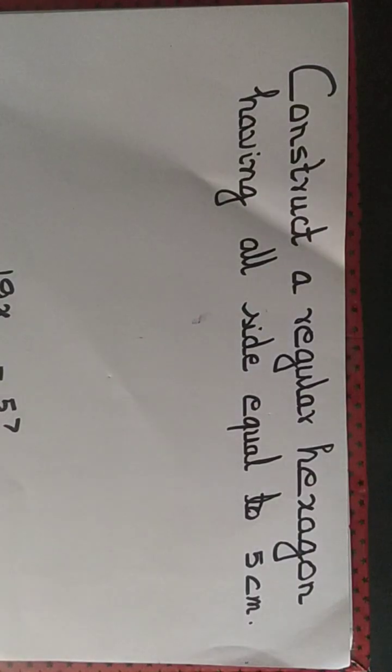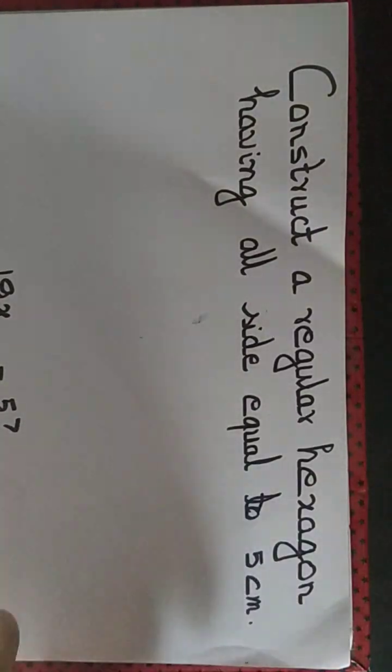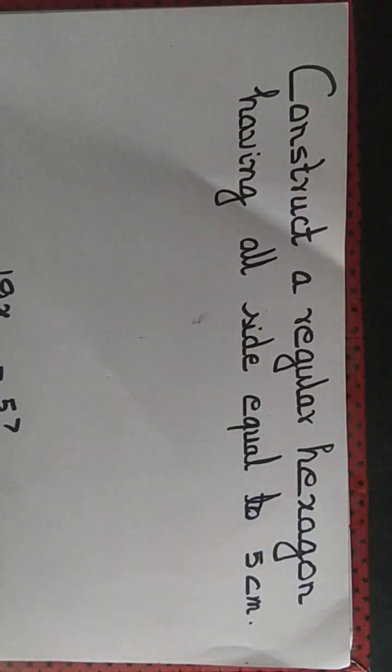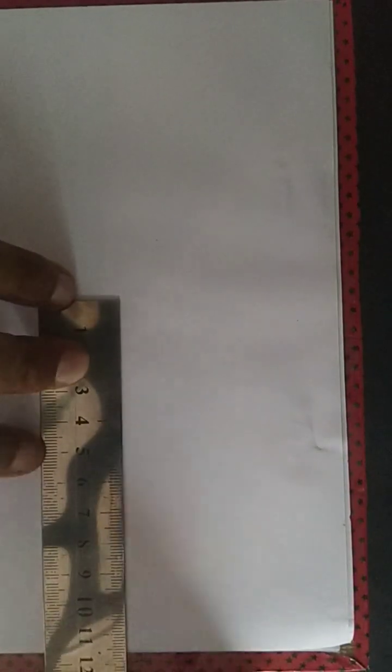Let us construct a regular hexagon having all sides equal to 5 cm. What we'll do is we'll draw a number of equilateral triangles having all sides equal to 5 cm and we'll get a regular hexagon.